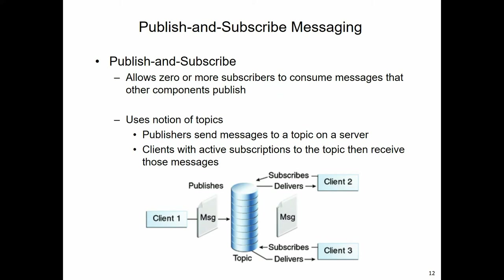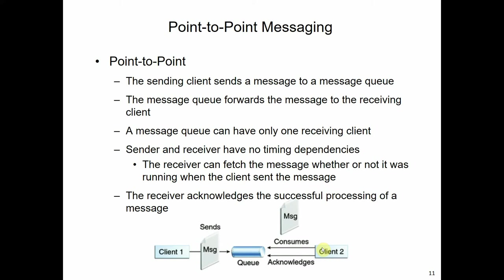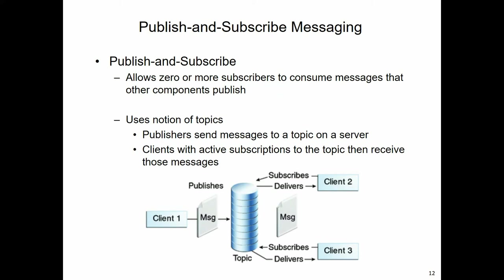In the publish-and-subscribe diagram, client one will send - or publish - a message to a topic within that provider. That destination will have a number of topics. If a client is subscribed to a particular topic, when that message is published the client will receive delivery of it. This illustrates the difference between push and pull. In the point-to-point queue scenario, the receiving client will pull the message when it is ready. In publish-and-subscribe, the message is pushed to the client.